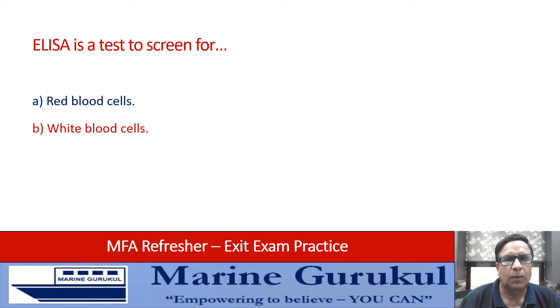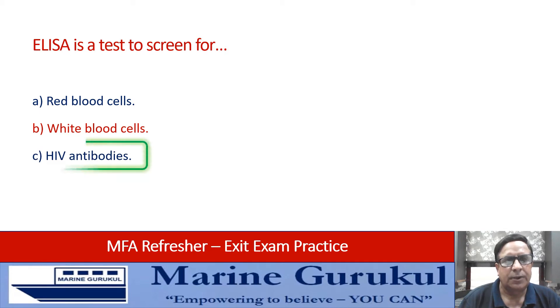ELISA is a test that screens for: red blood cells, white blood cells, or HIV antibodies. The answer is HIV antibodies.